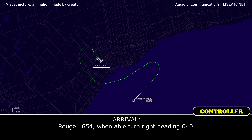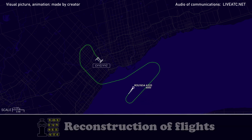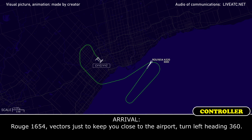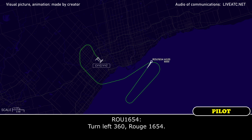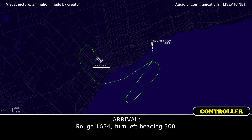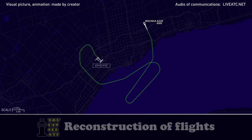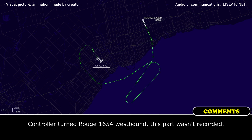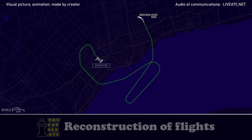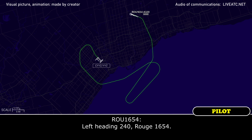Rouge 1654, when able, turn right heading 040. When able, 040 for Rouge 1654. Rouge 1654, vectoring just to keep close to the airport, turn left heading 360. Turn left 360, Rouge 1654. Rouge 1654, turn left heading 300. Left heading 300, Rouge 1654. Rouge 1654, turn left heading 240. Left heading 240, Rouge 1654.